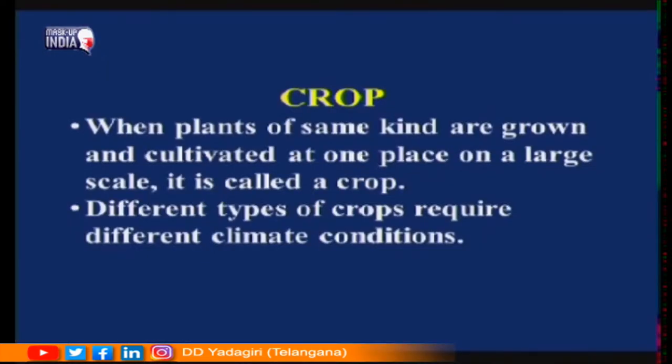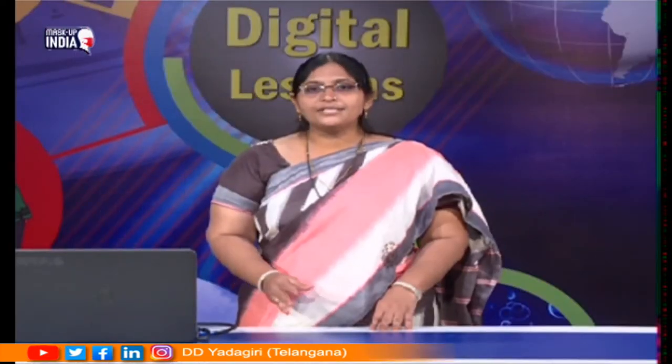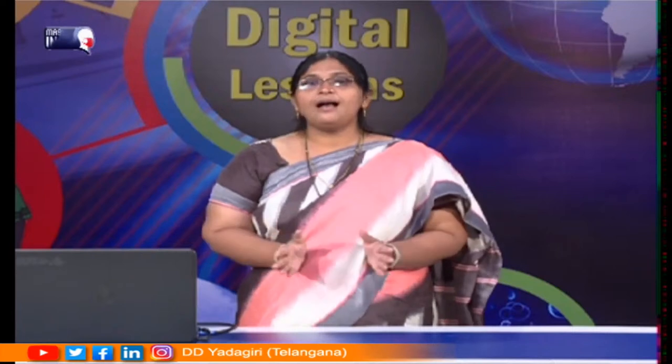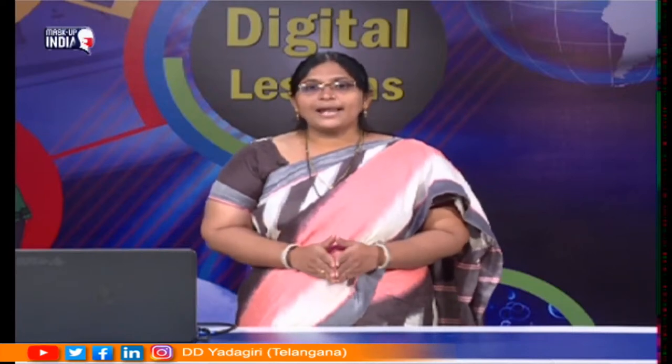Let us see the definition of crop. Crops means when plants of the same kind are grown and cultivated at one place on a large scale. For example, growing a large number of paddy plants in a particular area is called a crop. The same applies to sunflower or cotton plants grown in a very big area.